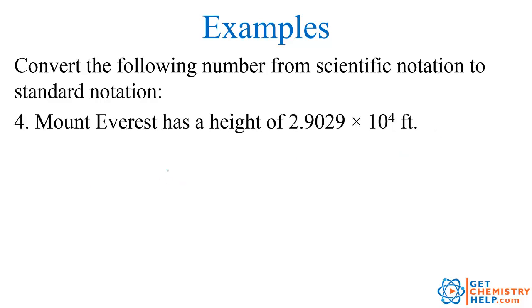Number 4 says Mount Everest has a height of 2.9029 times 10 to the 4th feet. The first step is to take 2.9029, take out all the significant digits and just rewrite those. Now I have to move them how many times? 10 to the 4th tells me to move the decimal 4 times.